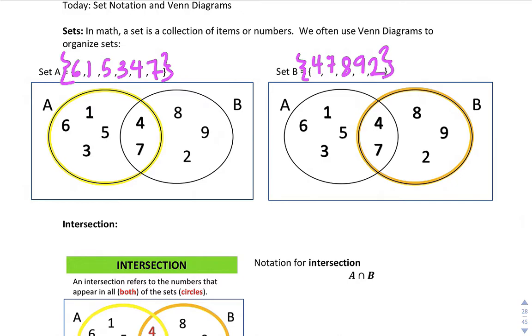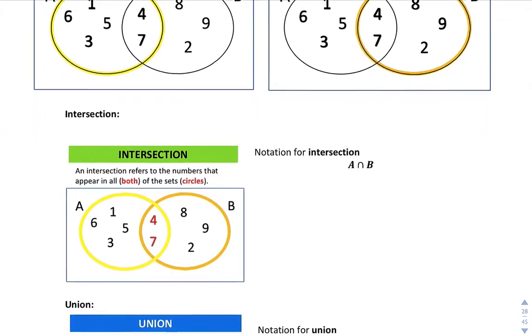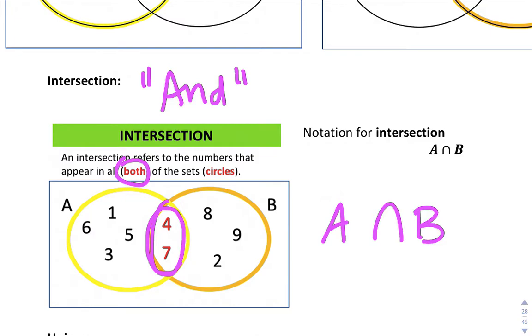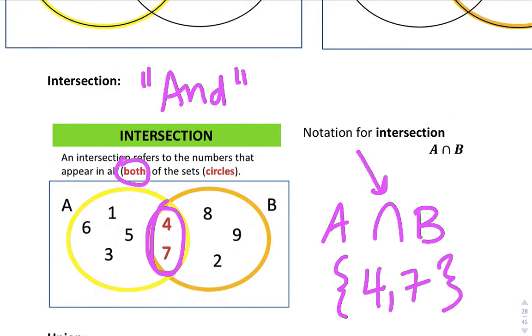Within set notation, we find different parts of the Venn diagram. So one of them is called an intersection. An intersection refers to the numbers that are in both of the sets or in all of the sets. So I call this AND. Intersections AND. They're in both sets. They're both circles. So it's right here. And there's notations. So A AND B. Here's the AND symbol. It looks kind of like an A right there. So A AND B. Okay. So if I say, what's A AND B? That set notation would be 4 and 7.